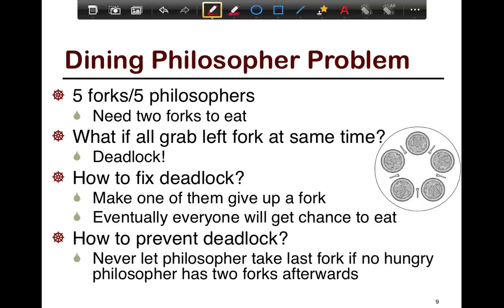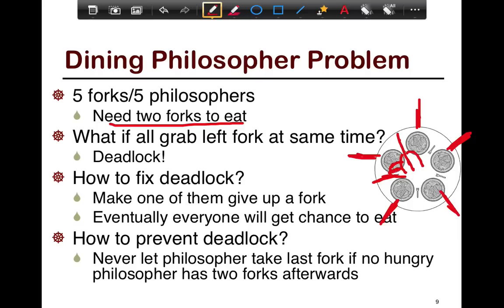Another example we'll be looking at is Dining Philosophers. This is a classical problem in operating systems. You have five philosophers each sitting at a table, and each of them has a fork to the left and to the right, and you need two forks to eat. So each philosopher has to grab both the fork on the left and the fork on the right.